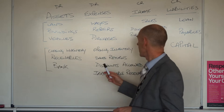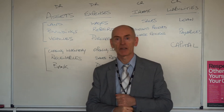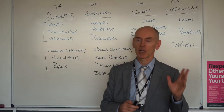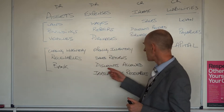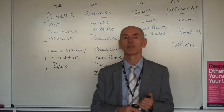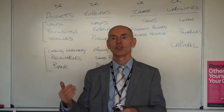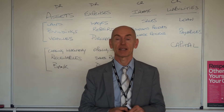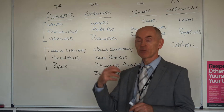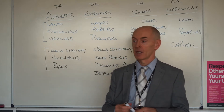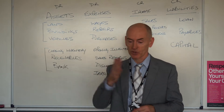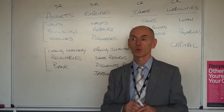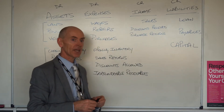Opening inventory is an expense — I'll explain more about why later. There is this thing called opening inventory which we treat as an expense, and closing inventory which we regard as an asset. Discounts allowed is the expense of allowing our customers to pay us a bit less — knocking off our sales price. Irrecoverable receivables, otherwise known as bad debts, is where you don't actually receive what you thought you were going to receive from your credit customers. For example, if a credit customer owed me 900 pounds, I'd have shown a receivable at 900 pounds; if they go into liquidation, I won't receive the 900 pounds and I write that off as an expense called irrecoverable receivables.